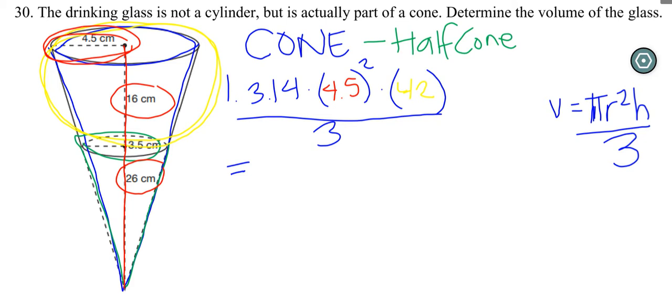So I'm going to plug this into my calculator. 3.14 times 4.5 squared times 42, and then we'll divide the whole thing by 3, and we get 890.19 cubic centimeters. Now that's not my final answer, that's just part of my answer.